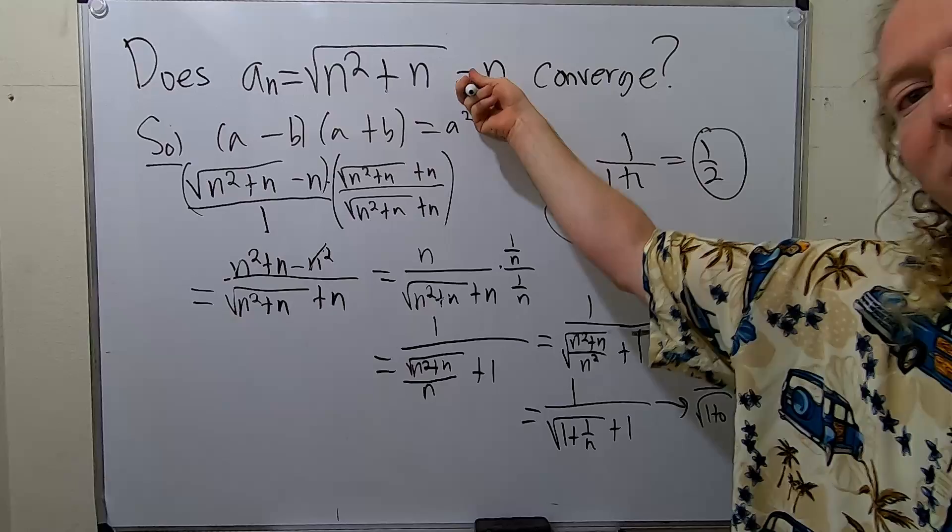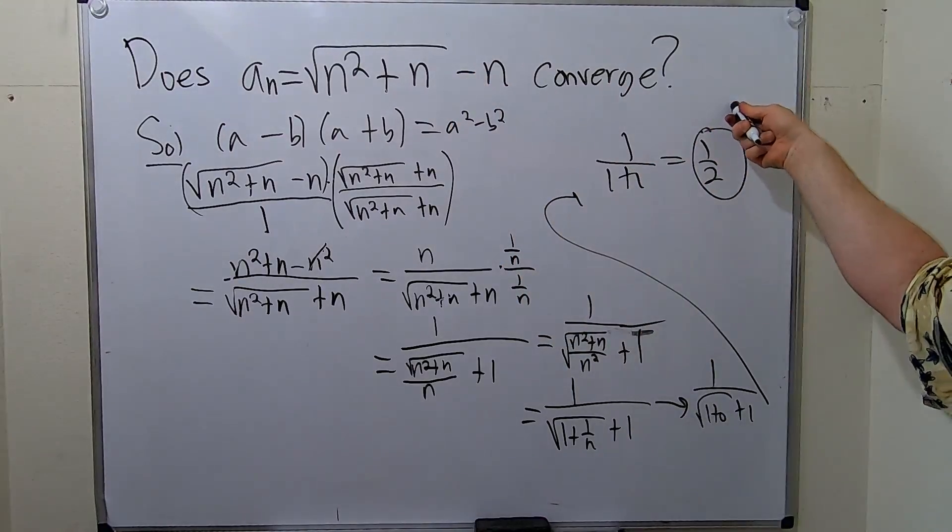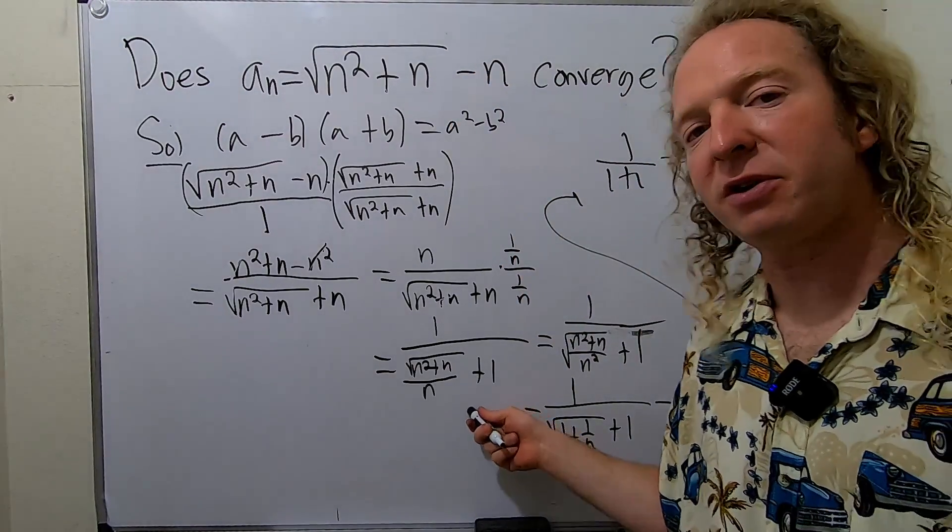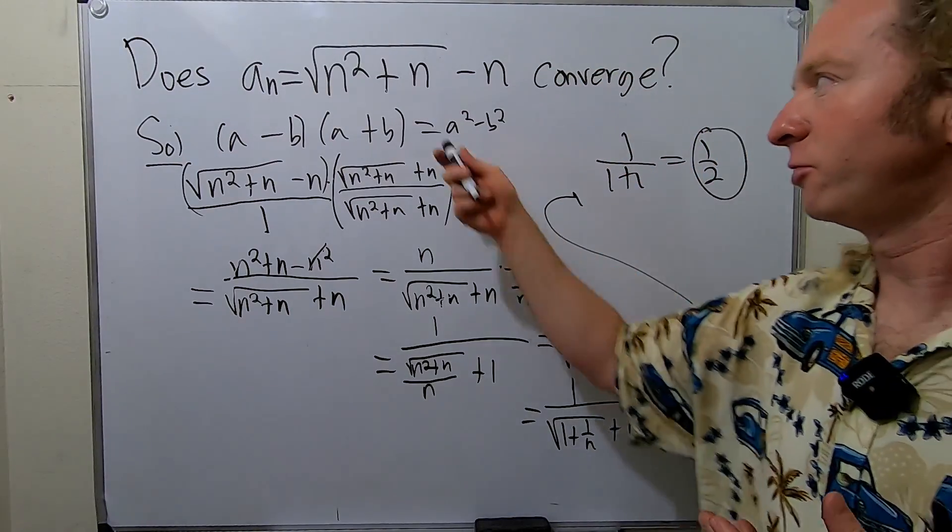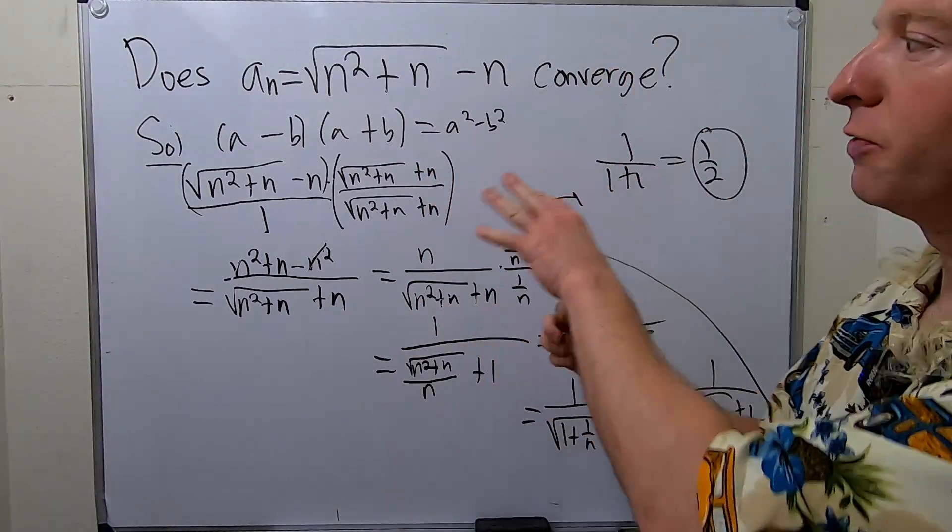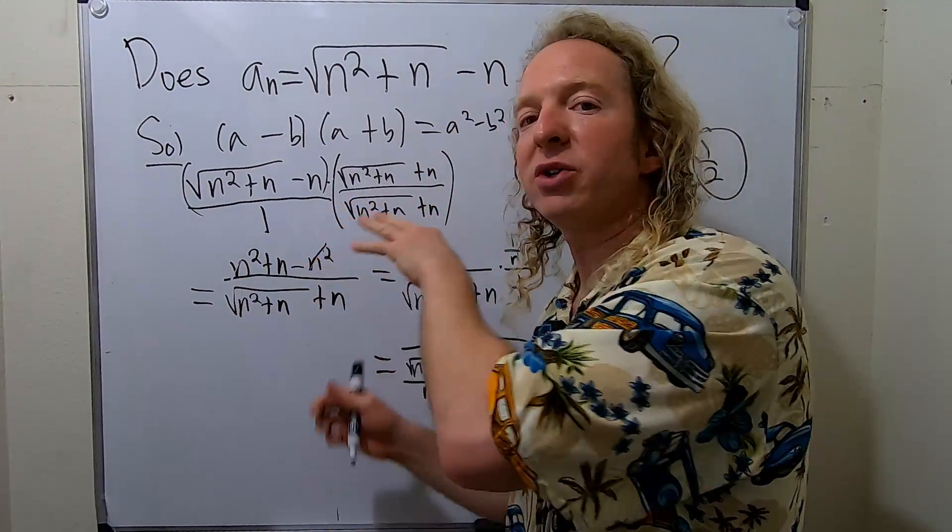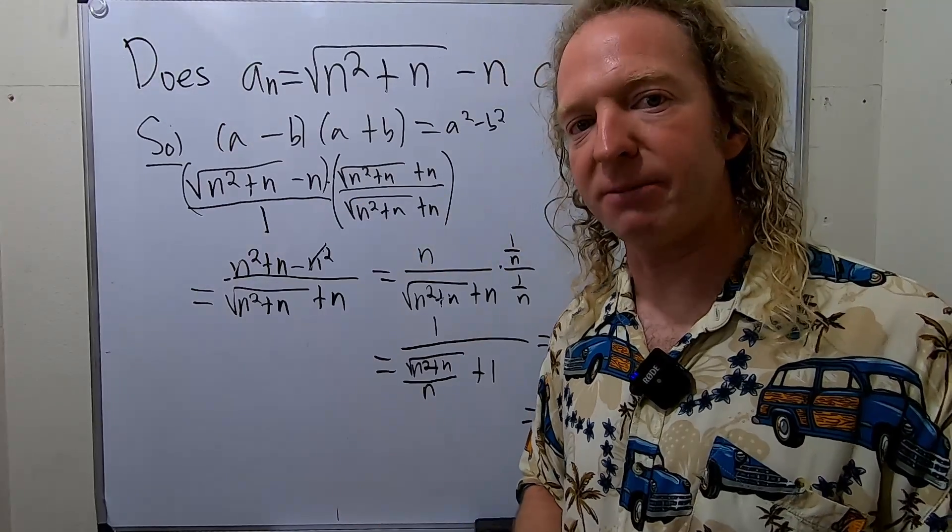So the answer is yes, this sequence does converge, and it converges to 1 half. I hope this video has been helpful to anyone out there working on these types of problems. If you encounter something like this, now you know the general strategy is to always rationalize the numerator. That's it. Take care.